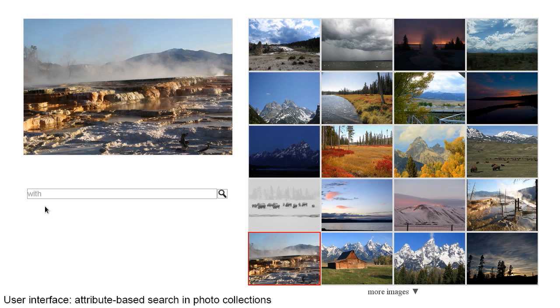Using our transient attribute dataset, we train regressors to recognize image attributes in new images. We leverage this to develop new user interfaces for searching images and exploring photo collections.